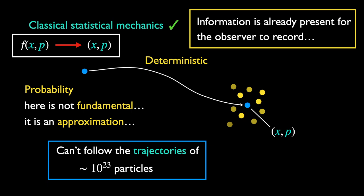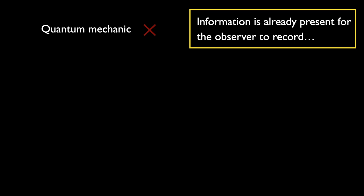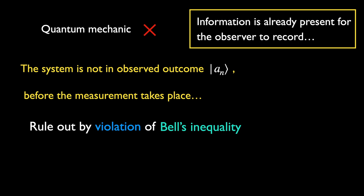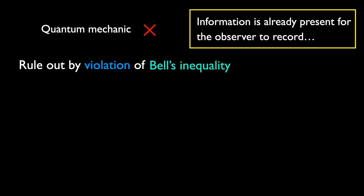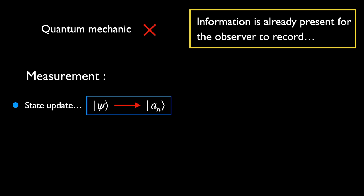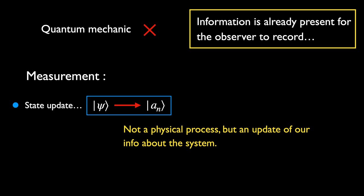Unfortunately, the situation is completely different for quantum mechanics. The system is not in the observed outcome before the measurement actually takes place. Such possibilities are ruled out by experiments which confirm the violation of Bell's inequality by quantum systems. One such experiment by John Clauser, Alain Aspect, and Anton Zeilinger was awarded the 2022 Nobel Prize in Physics. It involves making measurements on pairs of entangled photons and examining the resulting correlations. This will be discussed in great detail when we reach Chapter 12 of Weinberg's book. So the interpretation of state change due to measurement as just an update of information is put into question.